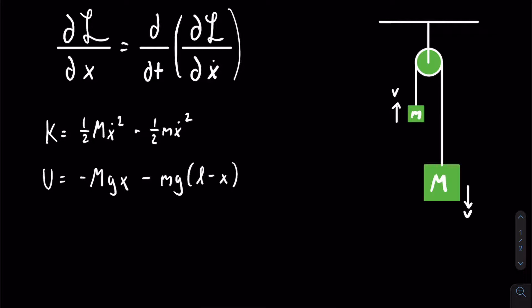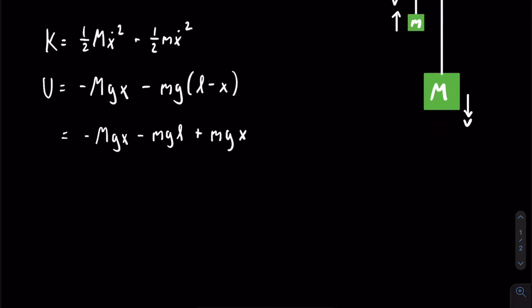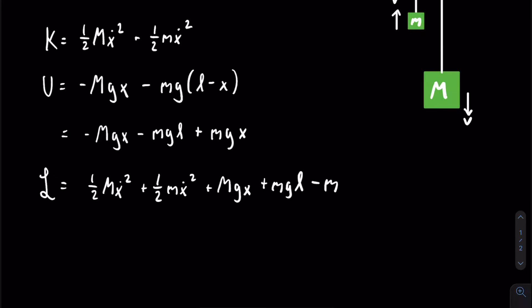The reason it works is because whenever the mass on the right is a distance x away from the middle of the pulley, the mass lowercase m is going to be a distance of l minus x away from the middle of the pulley. Then we distribute and get that U is equal to negative capital M g x minus lowercase m g l plus lowercase m g x. We now have everything we need to form our Lagrangian, which is equal to one half capital M x-dot squared plus one half lowercase m x-dot squared plus capital M g x plus lowercase m g l minus lowercase m g x.